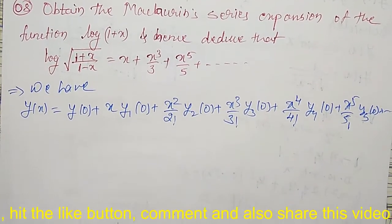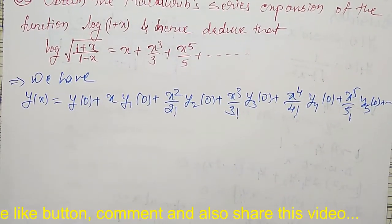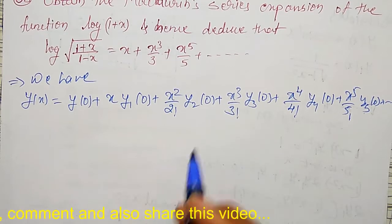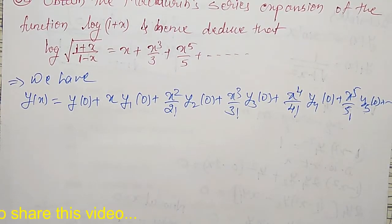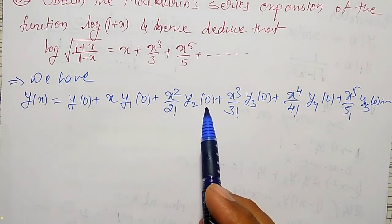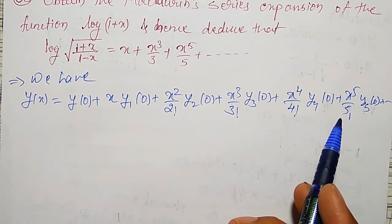Here y₁, y₂, y₃ are nothing but the successive derivatives of y, and we are calculating their values at x = 0.